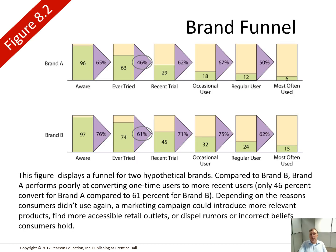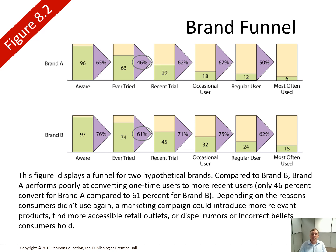This is an example of a brand funnel showing two hypothetical brands. We can see one performing poorly at converting one-time users to more recent users. Starting with a particular number, there's quite a large percentage lost — from 63 to 46 — in moving from having ever tried to recent trial. Depending on those numbers, we can see at what point the marketing is falling down.